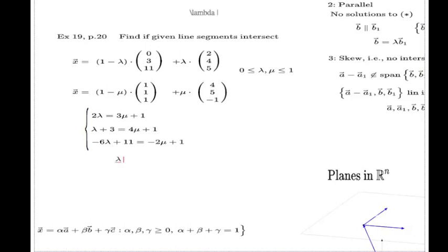If you say that lambda is 2 and mu is 1, let's just test this. We can test 2 and 1. Look at this: 4 and 4, 5 and 5, and negative 1 and negative 1. Thank you very much, we do have an intersection. But because you see my lambda went out of this interval, we do not have intersection of line segments. Thank you for this answer.